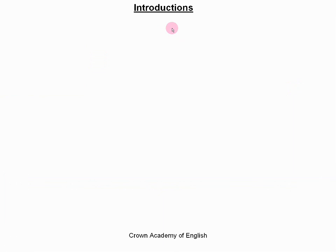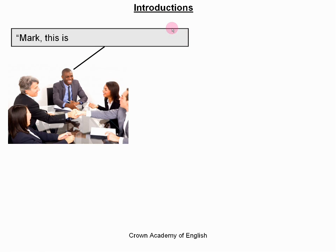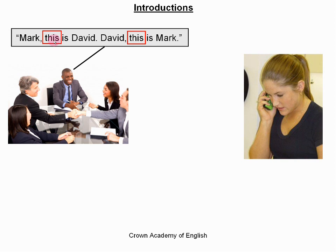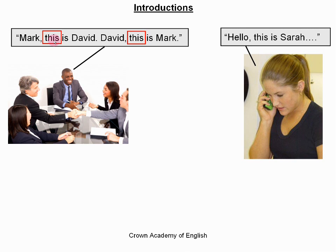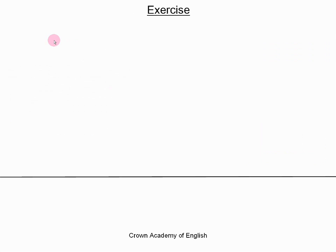And finally, introductions. We always use 'this'. For example, the man is introducing two men: this is Mark and this is David. So he is saying, Mark, this is David, and David, this is Mark. For introductions, we say 'this is'. And it is the same on the telephone — the girl is saying, hello, this is Sarah. She is introducing herself, so we use the words 'this is'.